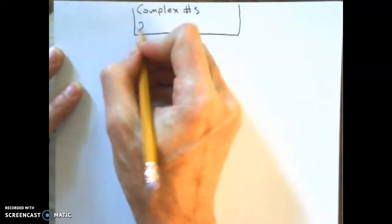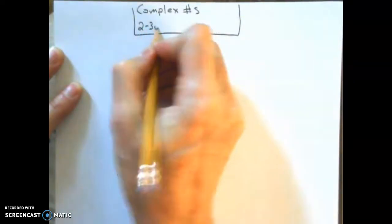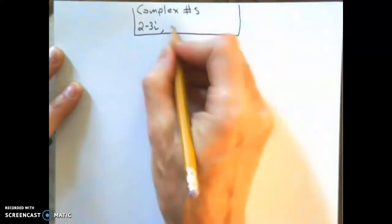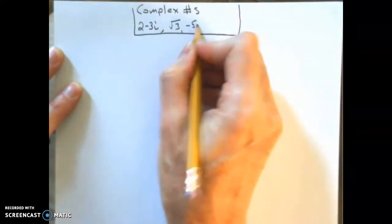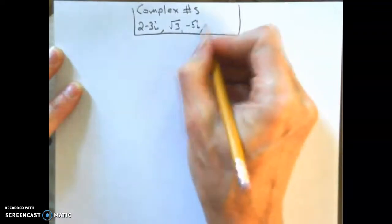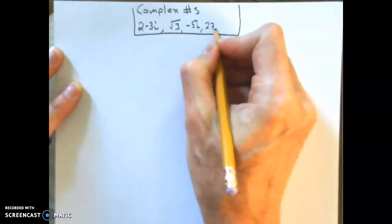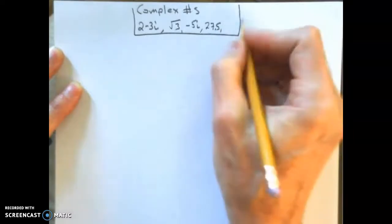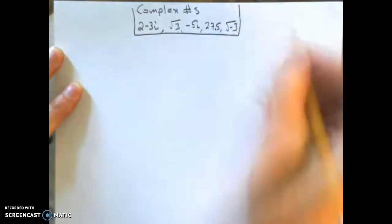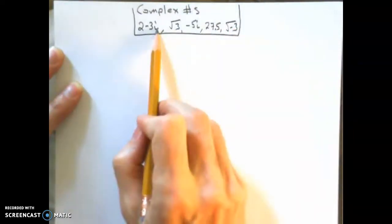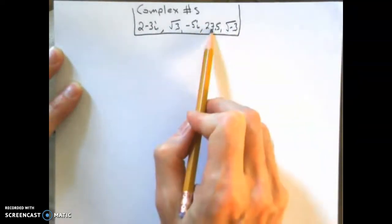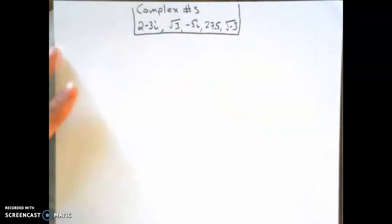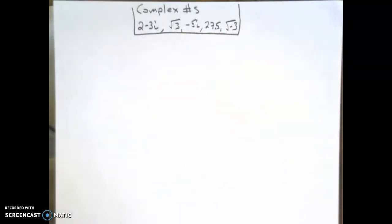Here are some examples: 2 minus 3i, square root of 3, negative 5i, 27.5, square root of negative 3. Notice some of these are imaginary — the i means square root of negative 1. These are imaginary numbers, and these are real numbers. If you don't know what imaginary numbers are, don't worry about it. We're going to talk about this a lot later in the year.